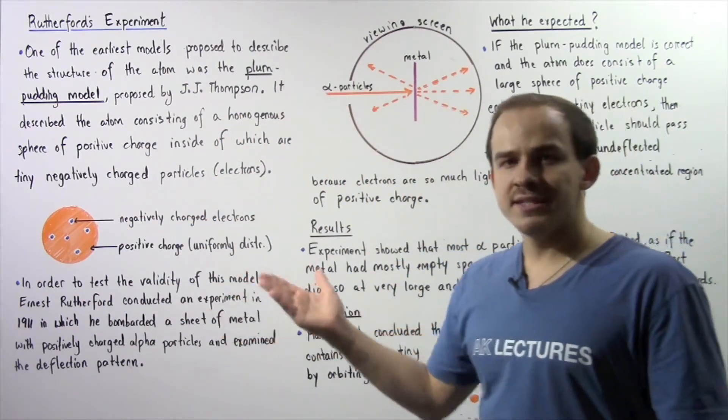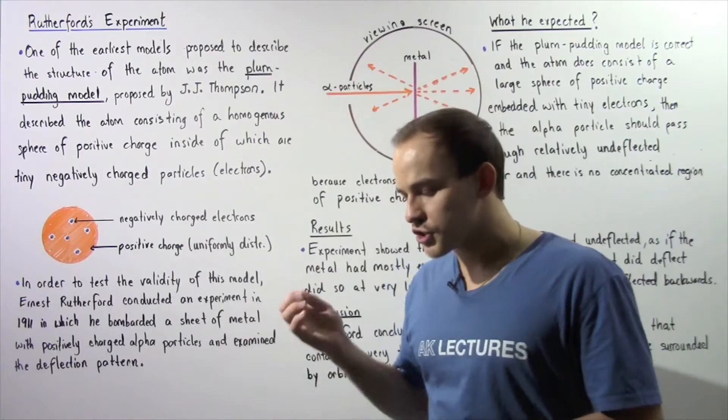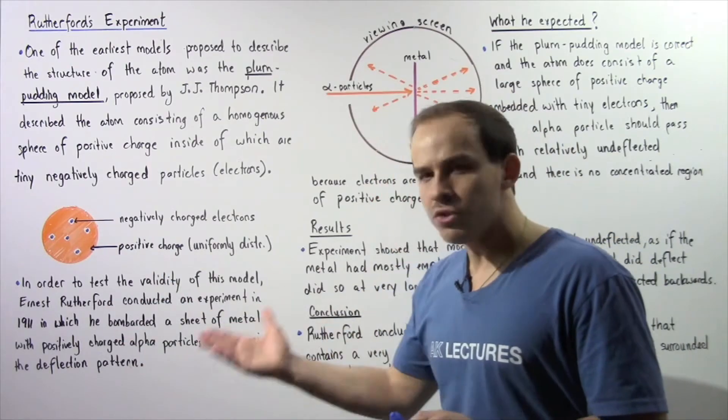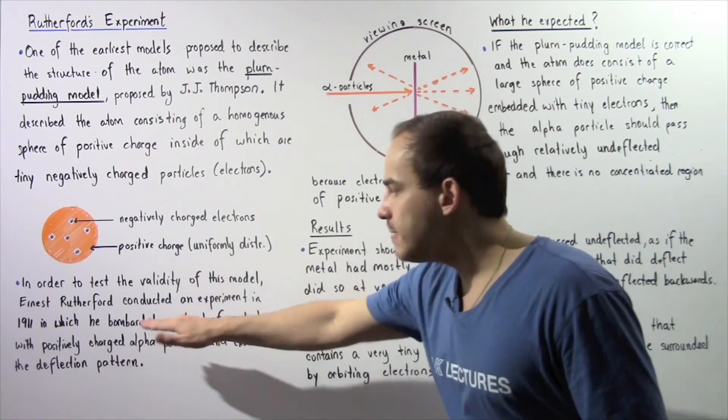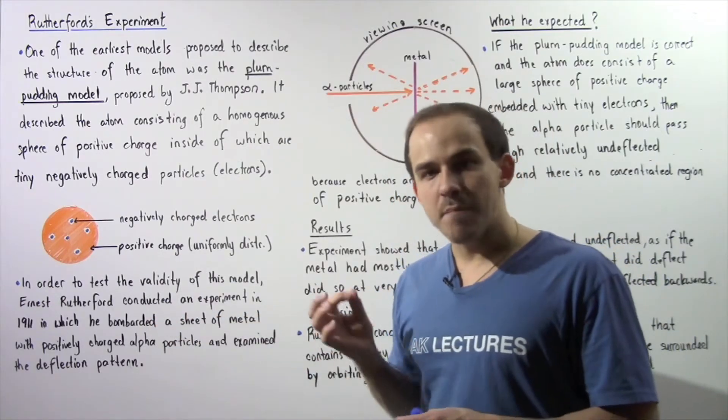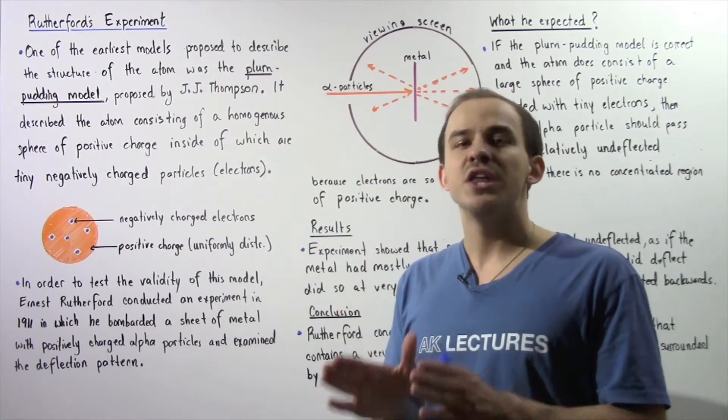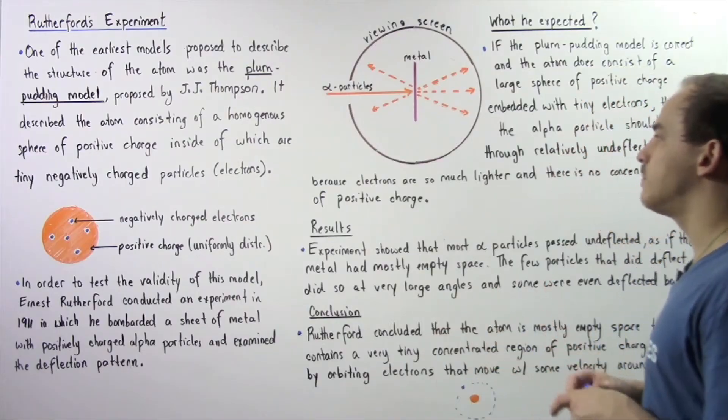In order to test the validity of this proposed model for the structure of the atom, a scientist by the name of Ernest Rutherford conducted an experiment in 1911 in which he bombarded a sheet of metal with positively charged alpha particles and examined the deflection pattern of those alpha particles.